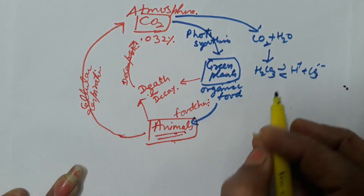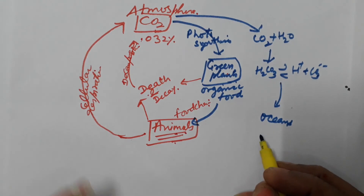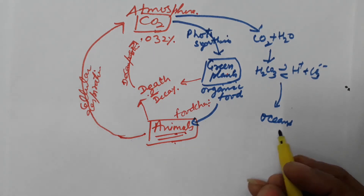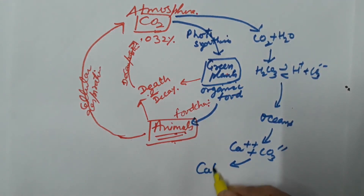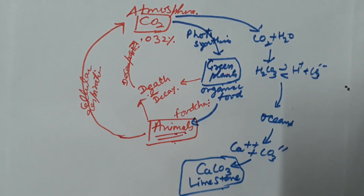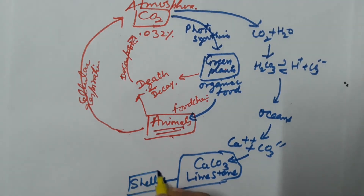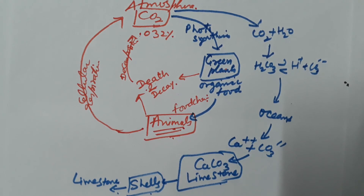These carbonate ions go into the oceans. Inside the oceans, when chemical weathering takes place, calcium ions are released from the rocks and also come into the oceans. In the oceans, these calcium ions combine with the carbonate ions and form calcium carbonate — that is, limestone is formed. This limestone is used by aquatic animals in the formation of their shells. When the organisms die, this limestone gets deposited at the bottom of the oceans.